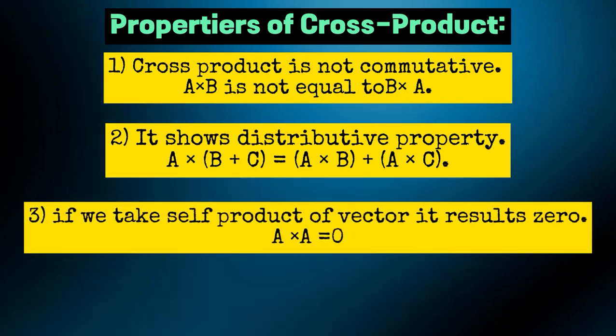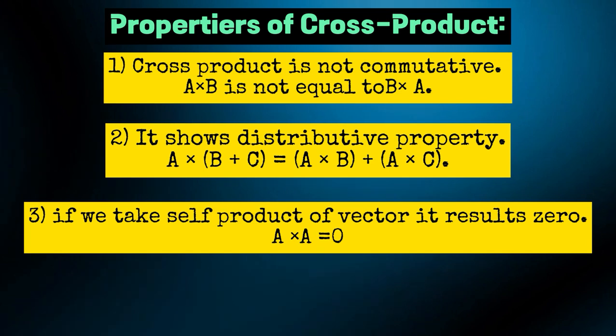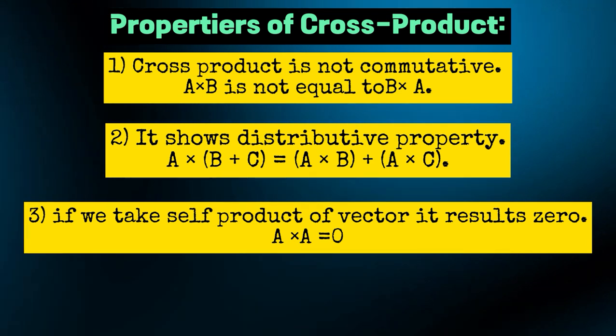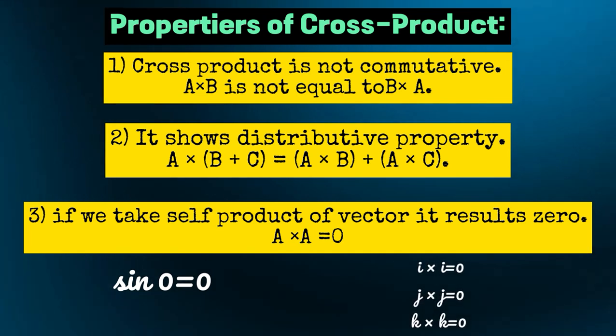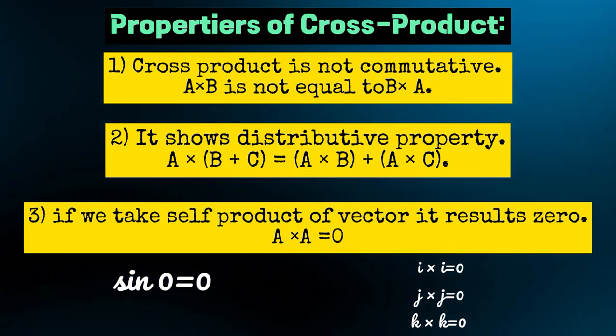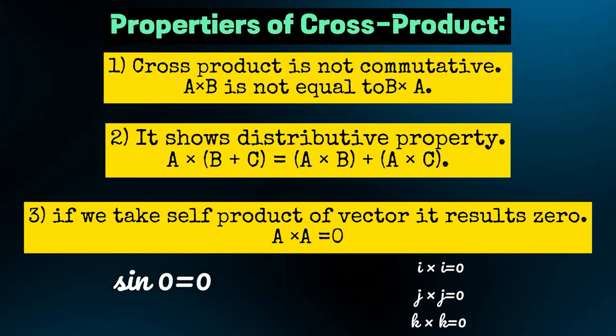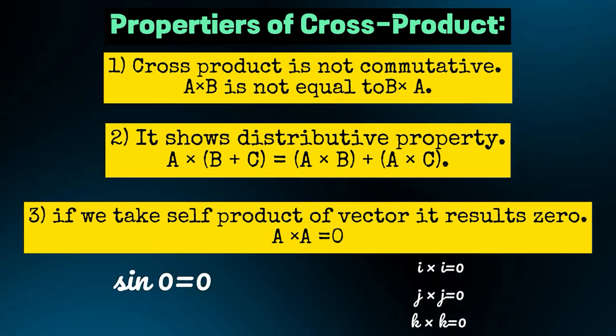Property 3: If we take self product of vector it results 0. A cross a equals 0, because the angle is 0, so sine of 0 is 0. In terms of unit vectors we can represent them as: i cross i equals 0, j cross j equals 0, k cross k equals 0.